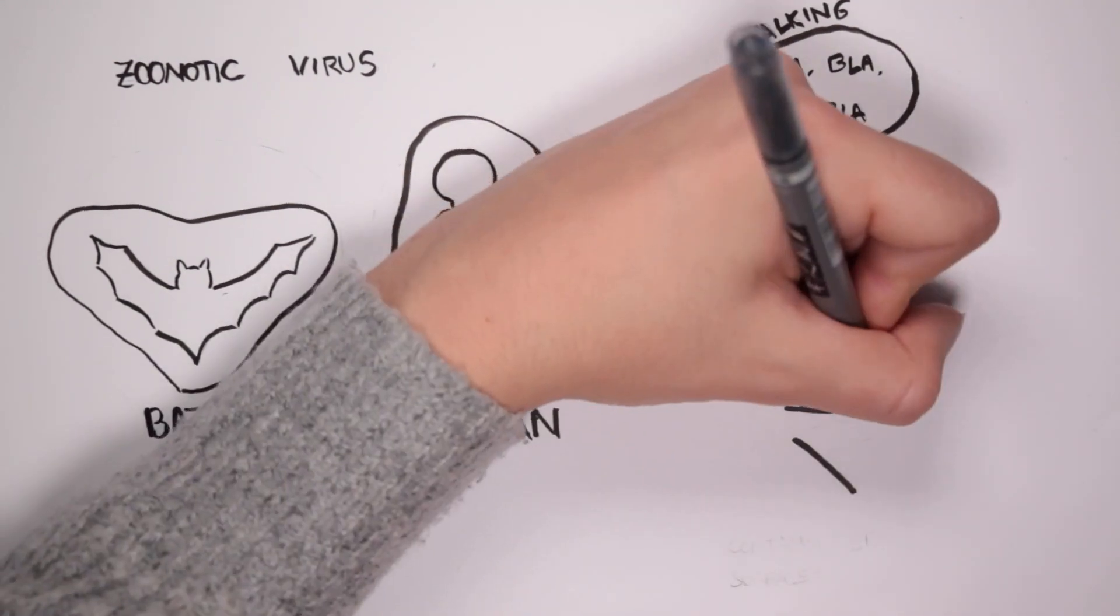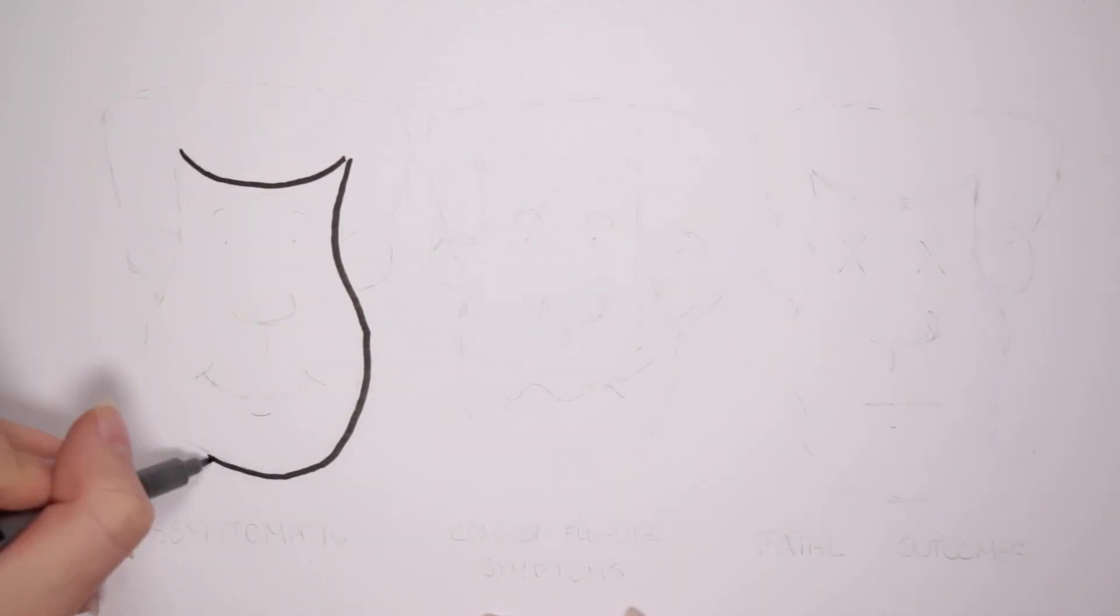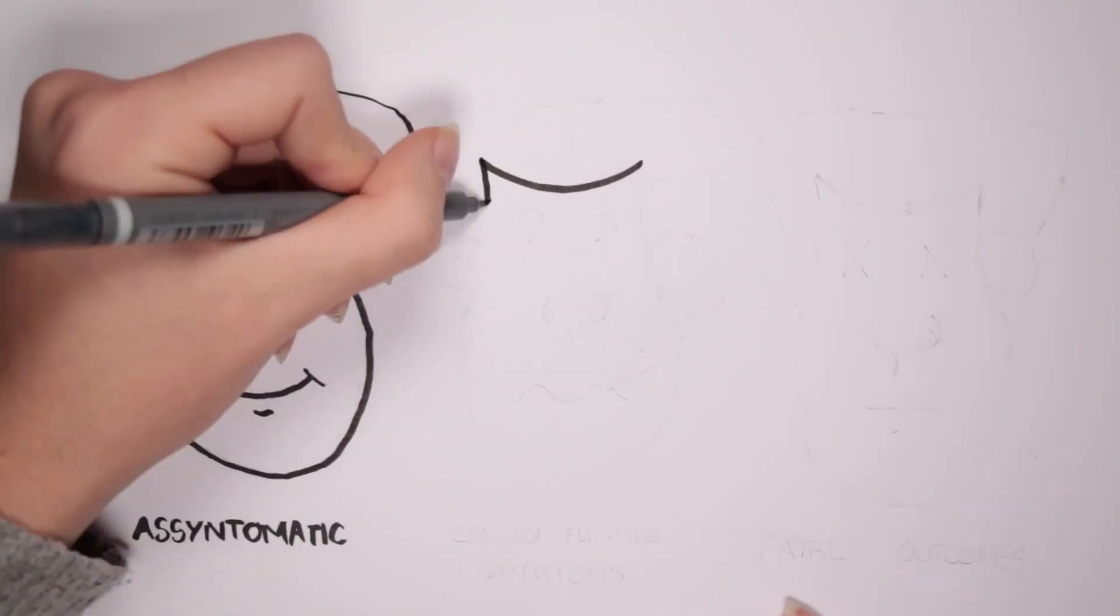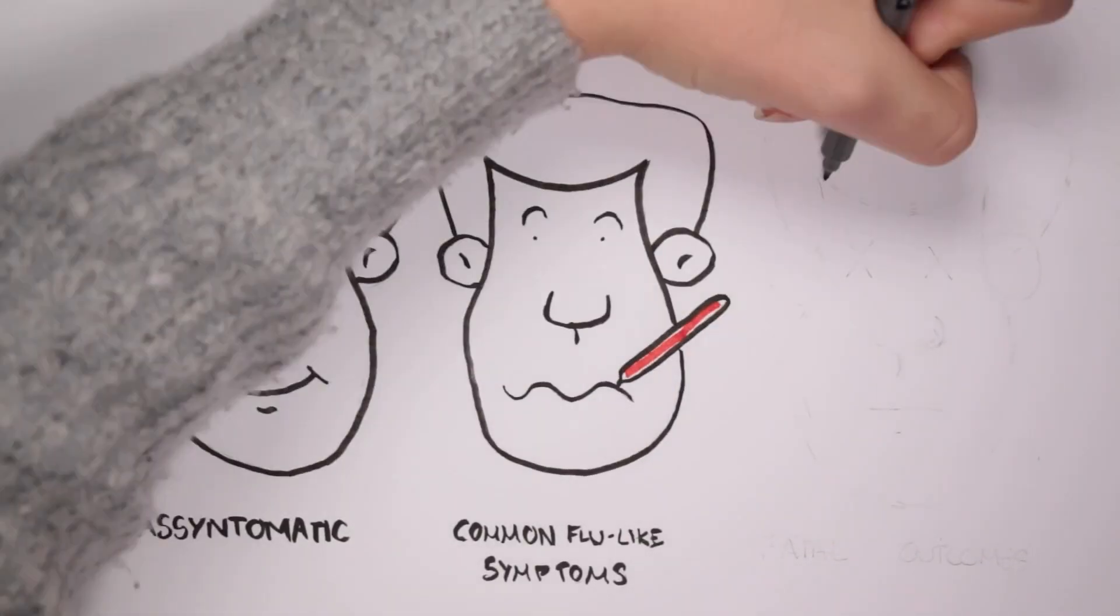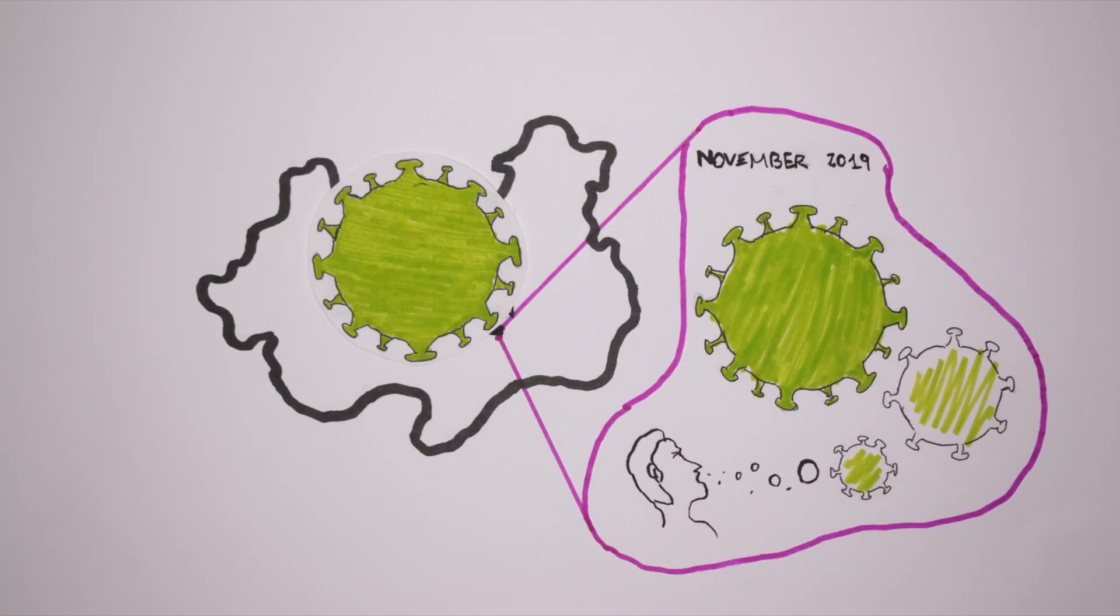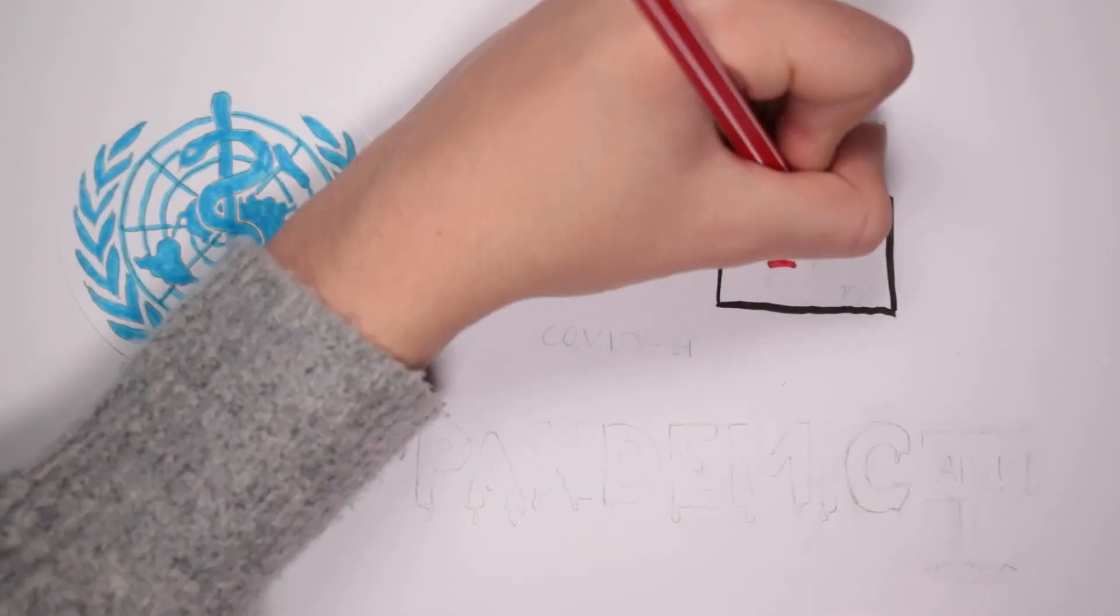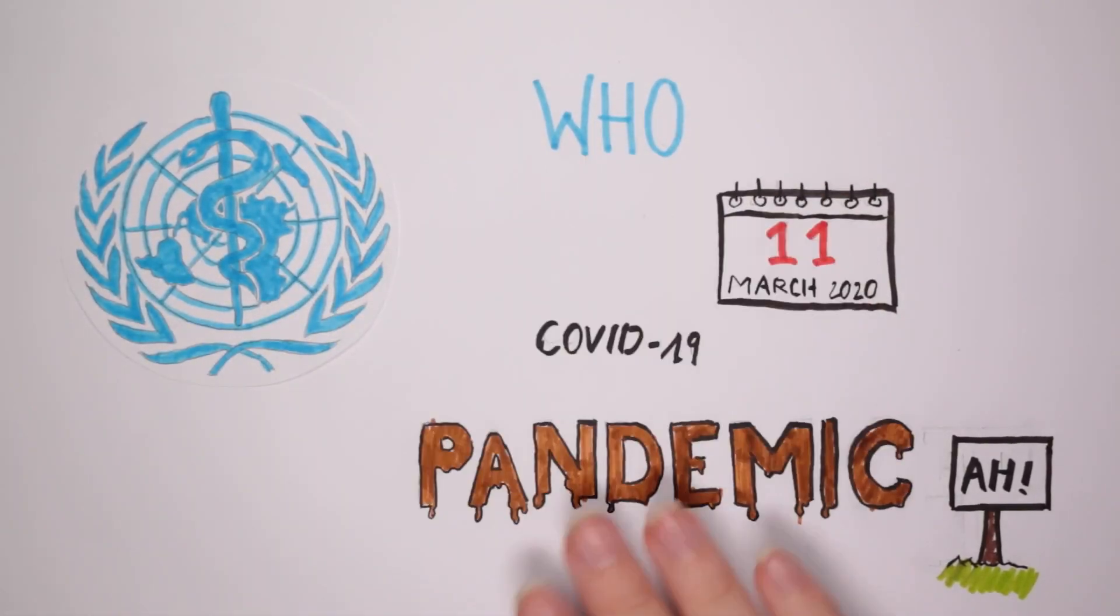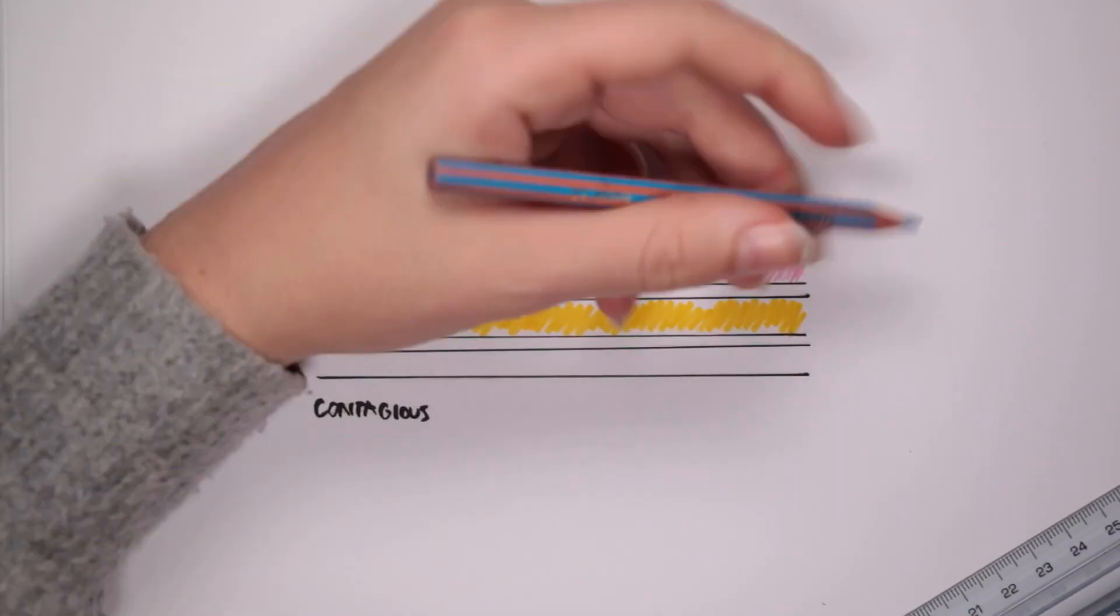The virus spreads through droplets by coughing, sneezing, communication, and even contaminated surfaces. The symptoms of COVID-19 can vary. An individual can be asymptomatic, obtain minor symptoms common to the flu like a fever or even a dry cough, or the infection can lead to possible fatal outcomes. Due to its high level of contagiousness and therefore its fast spread, the World Health Organization on March 11th of 2020 declared COVID-19 as a pandemic.